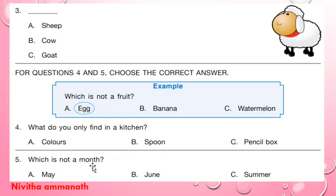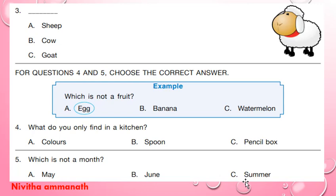Next question: which is not a month? May, June, summer — May and June are months, so summer is a season. C is the correct option.